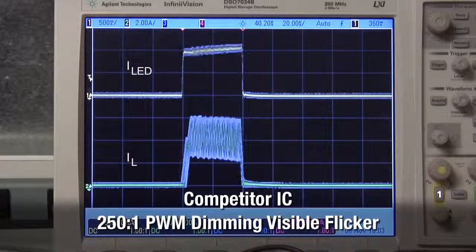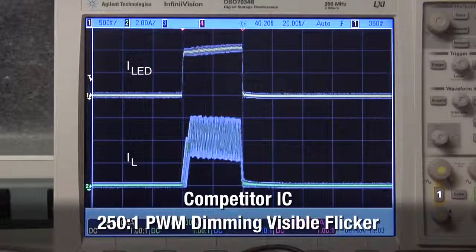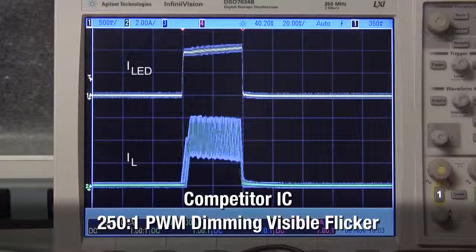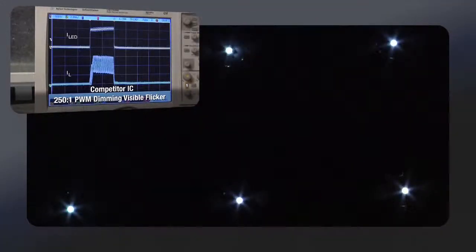In comparison, a competitor IC shows non-repetitive LED current when PWM dimming either with or without spread-spectrum. That shows up as undesirable flicker.